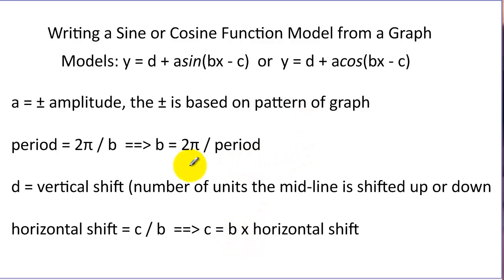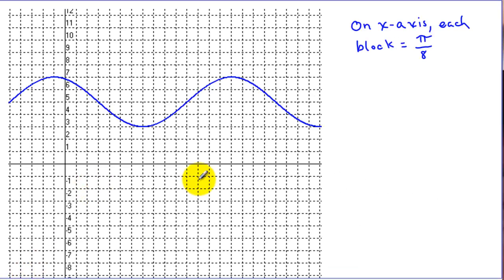Let's use these rules to write a couple models. When we look at a graph, we don't know whether this is a sine or cosine because we don't know where the graph started. We're going to use the same graph twice, and for this one, we're going to write a sine model.